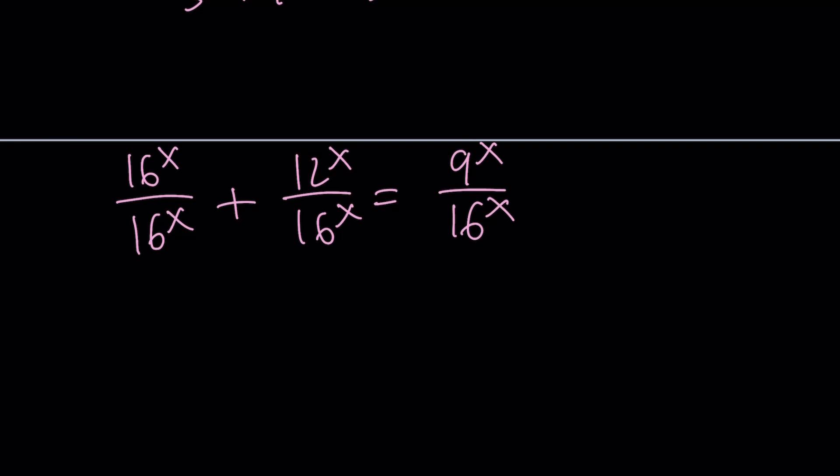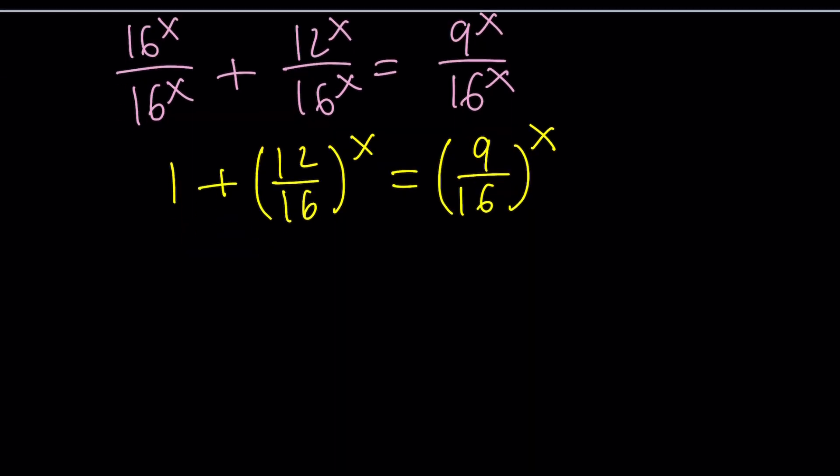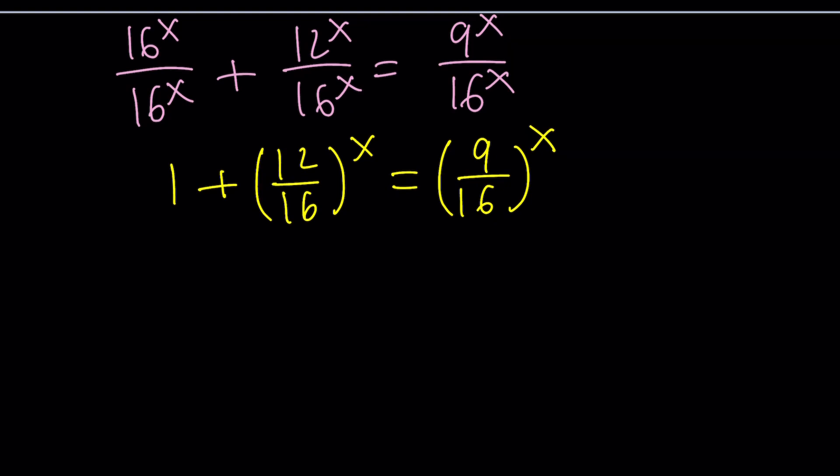Now, let's take a look. First of all, this gives us 1, which is nice. This gives us 12 over 16 to the power of x. And this gives us 9 over 16 to the power of x. Great. Now, we've got a simpler looking equation. But notice that 12 over 16 can be simplified. And it's almost always going to be the case. Divide by 4. You're going to get 3 over 4 to the power of x.